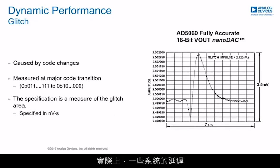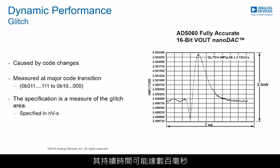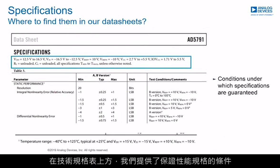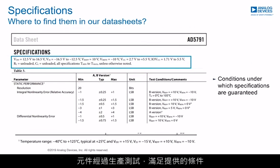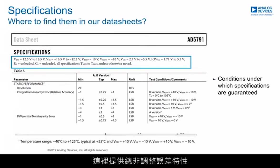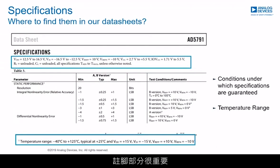Indeed, the delay of some systems can be dominated by the control algorithms, which can be a hundreds of milliseconds iteration. Here, there is an example of the specifications table contained in the datasheet. Above the table of specifications, we give the conditions under which specifications are granted. Parts are tested through production to meet the conditions quoted. Usually, supply ranges and load conditions are quoted in this area. The static performance section has information such as INL, DNL, and the main DC linearity specification. This is where the total and adjusted error specification will lie. The footnotes section is important to read, as this often indicates the temperature range of the device.